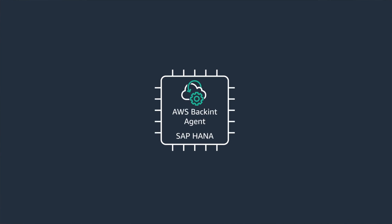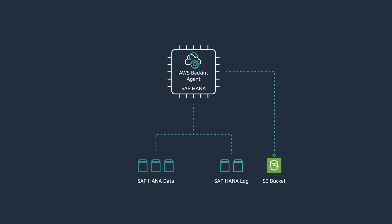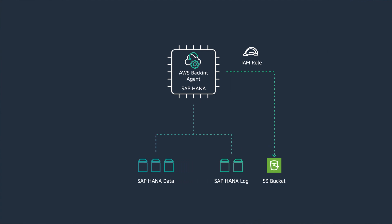It is installed on your SAP HANA database and it backs up the data directly to an Amazon S3 bucket. As part of the configuration, an IAM role is attached to the EC2 instance that provides the required S3 permissions.